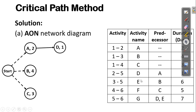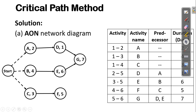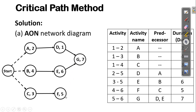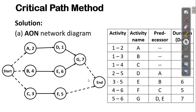Activity E emerges after activity B, and activity F starts after completion of activity C. Lastly, activity G has two predecessors, D and E — once D and E are completed, we have activity G. Activities G and F form the last part of the project, so once G and F are complete, we reach the end of the project. This is the network diagram for activity on node.